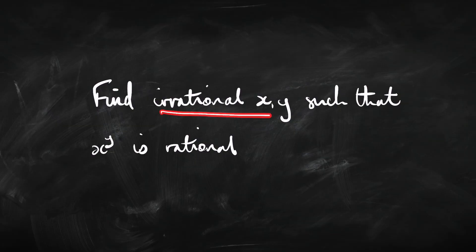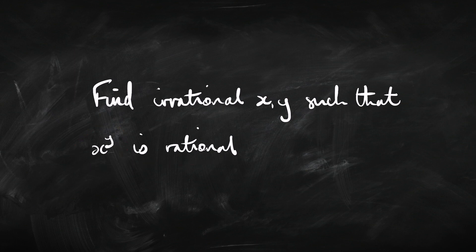A constructive proof will tell you what the number is that you're asking for. The non-constructive proof will answer the question — it will say there is such a number — but it won't tell you which one it is. It won't construct that number. How could a proof do that? Here's an example: you've got to find two irrational numbers x and y such that x to the power of y is a rational number.